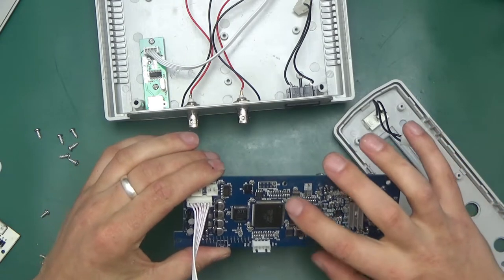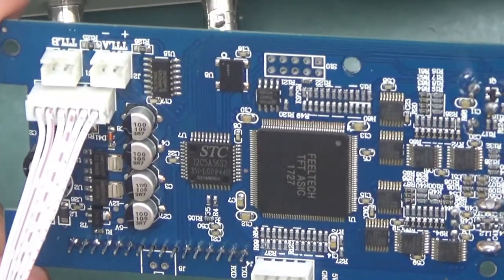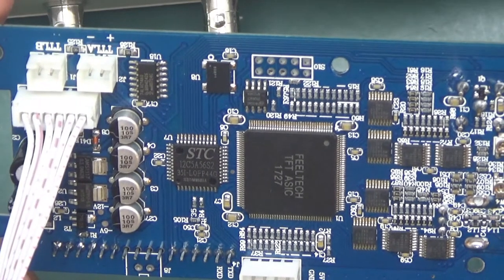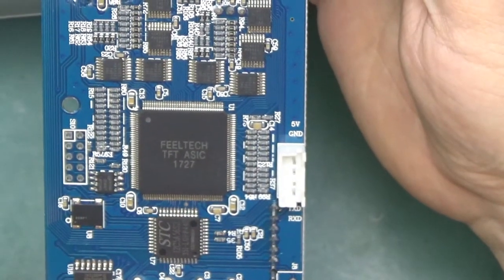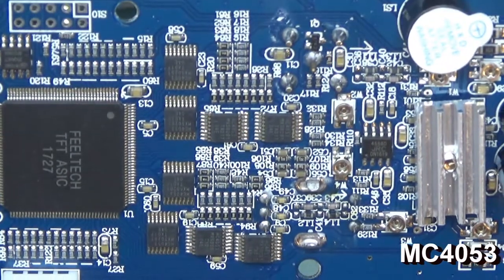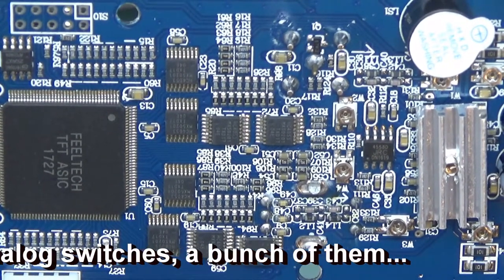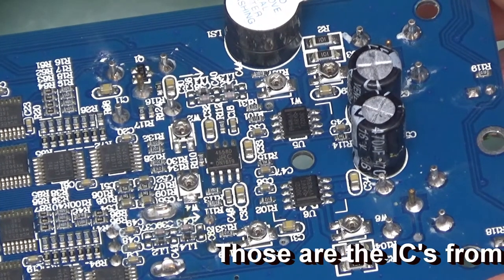There's a whole bunch of those chips. Those are all the same. Main processing power here, we've got the STC 12C5A56S2. It's a microcontroller programmed with some software to run this thing. And the FeelTech TFT-ASIC 1727. We won't be able to find any data sheet on this. All those chips are MC4053, 30021. There's a TI logo, 3VT, VPM 3, and then G4 with an underline.